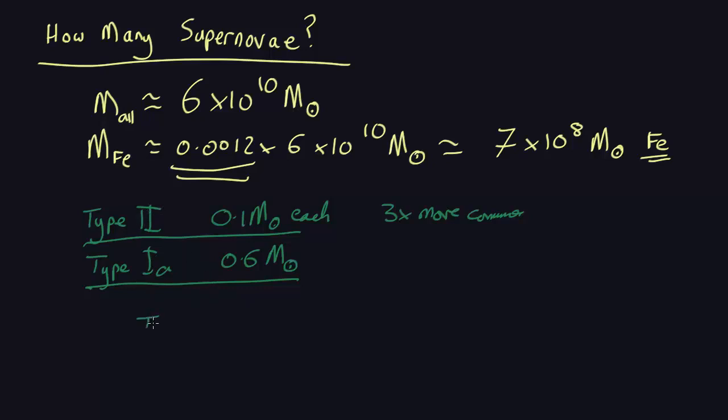So, type 2s produce about 1 third of the iron, and the type 1As generate about 2 thirds. So, that's all we need to know to work out how many of each type of supernova there are.